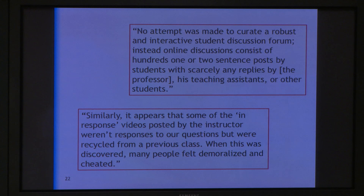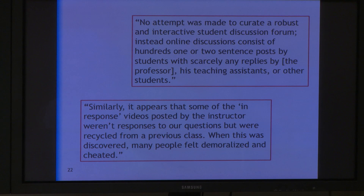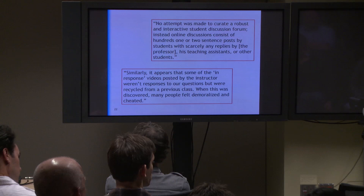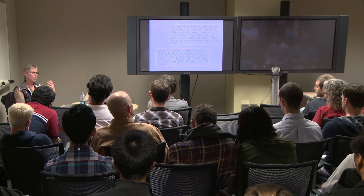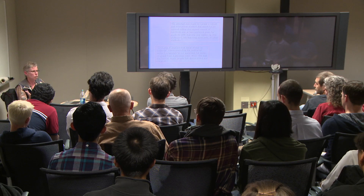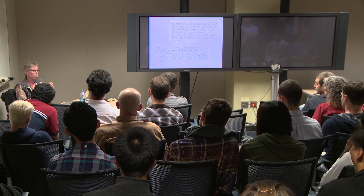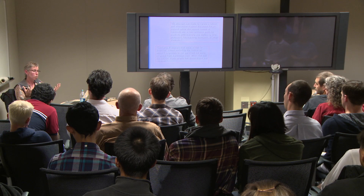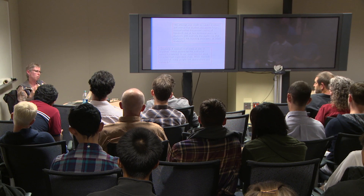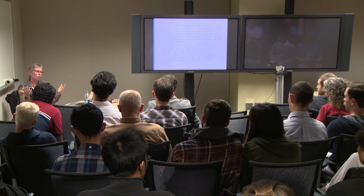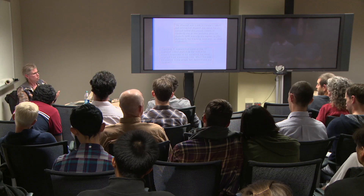I think what level of instructor involvement should be one of the standard fields in course descriptions — you should just publish that. Right now there's no way to tell, when picking between two courses, if one is going to have the instructor involved or one isn't. That should just be a way to tell and should be standard. That may be a place where there's some conflict of interest with providers versus students, but I think there should just be a standard field.